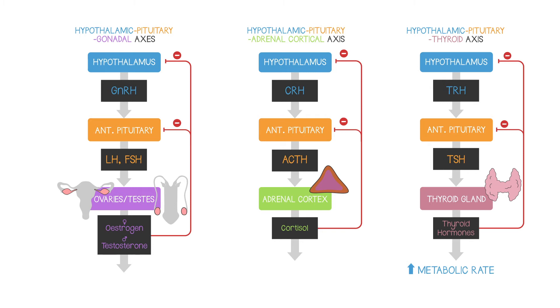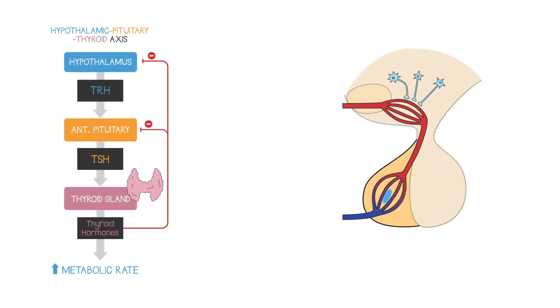Of course, nothing is ever that simple though. In the hypothalamic pituitary ovarian axis in women, the feedback changes from negative feedback to positive feedback during the menstrual cycle, and that's involved in the control of ovulation. It's also worth noting that the anterior pituitary gland also produces growth hormone, which is one of the somatomammotropin family, and growth hormone doesn't fit so neatly within an axis structure.